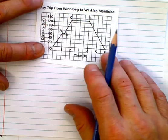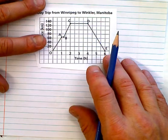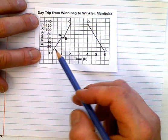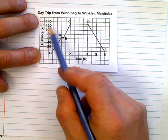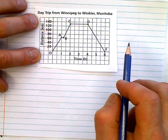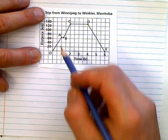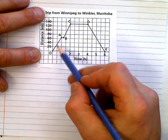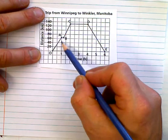Here's another one. So, trip to Winnipeg, trip from Winnipeg to Winkler, Winkler, Manitoba. So, you got your distance up here. Notice that every tick is 20. And then every tick here is 30 minutes. So, they started at zero time, zero distance. And as they drove, how long did they drive for the first little bit? They drove for an hour and made it about 65 kilometers.